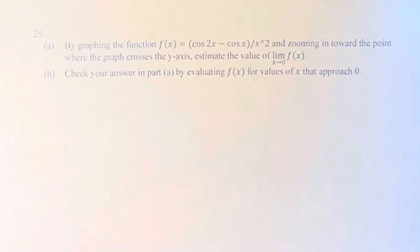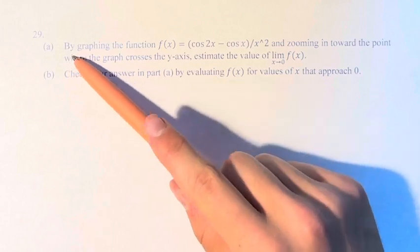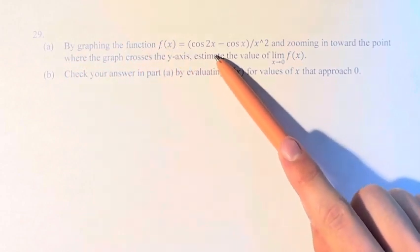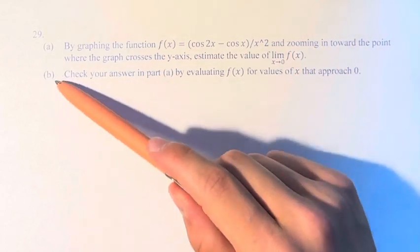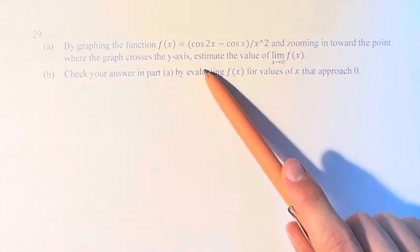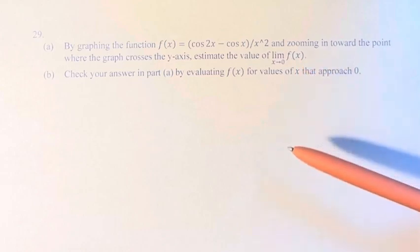Hello and welcome back to another video. In this problem, we're told by graphing the function f(x) = (cos 2x - cos x)/x² and zooming in towards the point where the graph crosses the y-axis, estimate the value of the limit as x approaches zero of f(x).